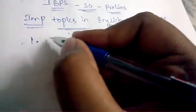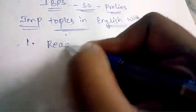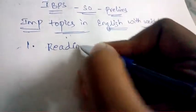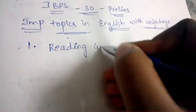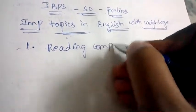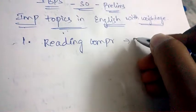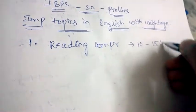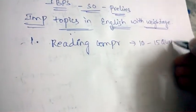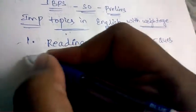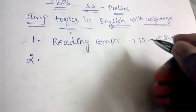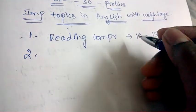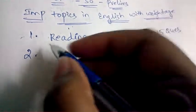The first important topic in English is Reading Comprehension. From Reading Comprehension, 10 to 15 questions will be asked in the exam.